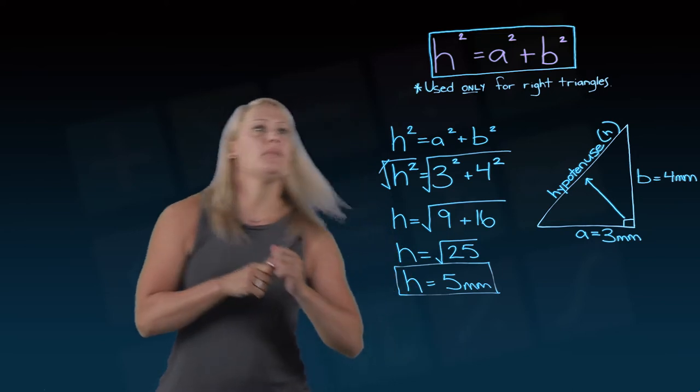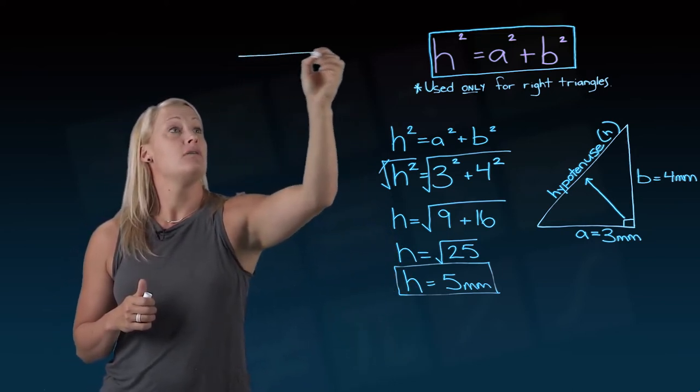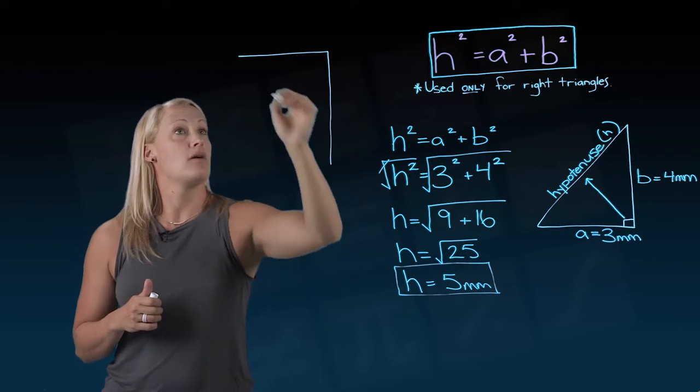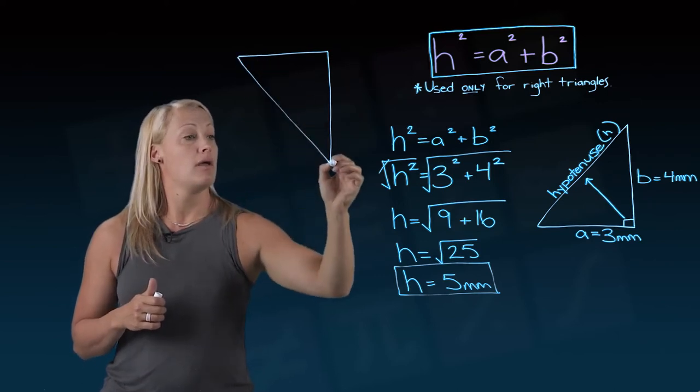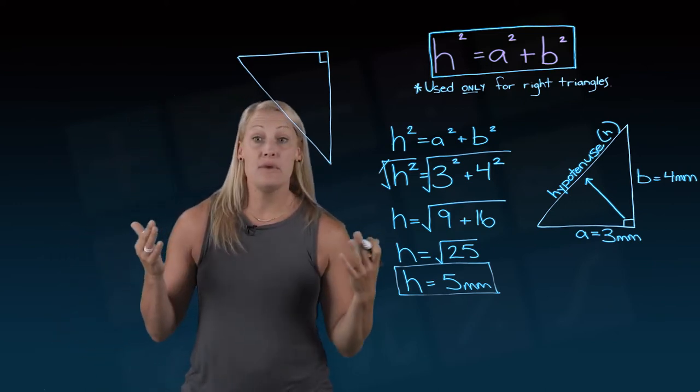So let's try a second one. Let me grab a different color here. This only works for right triangles. So let's draw you a second right triangle. This guy's upside down, but that doesn't matter. It's still a right triangle.